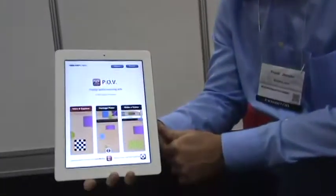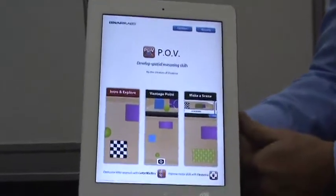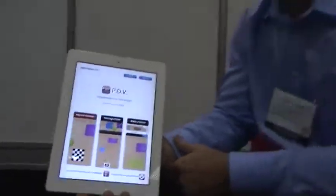Thanks, Scott. We're excited about POV, which is our latest app in our family of skill-building apps. Our apps tend to focus on the fundamental skills you need to succeed in school, things like fine motor skill development, correct letter formation, and our most recent app will focus on spatial reasoning skills.